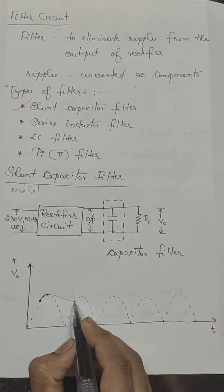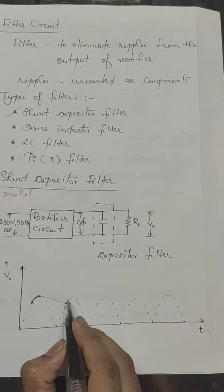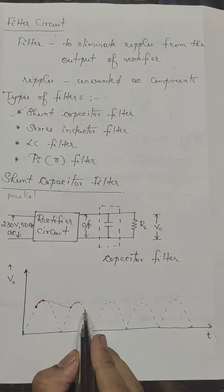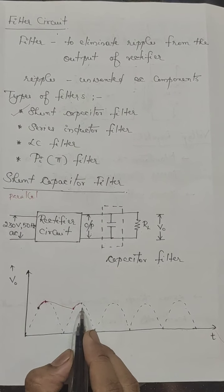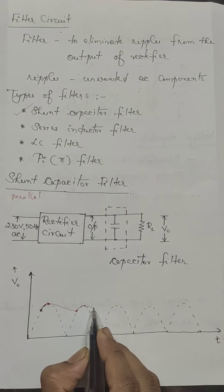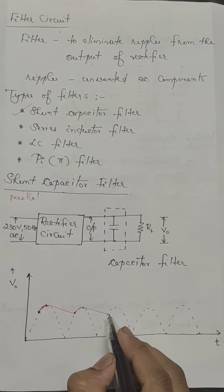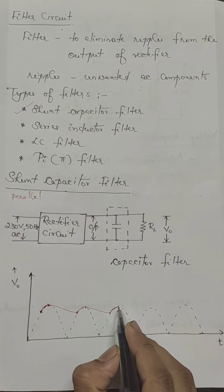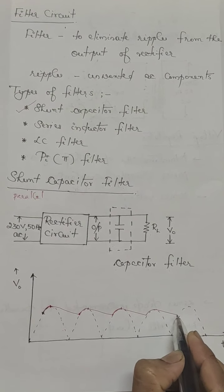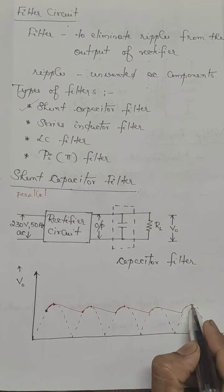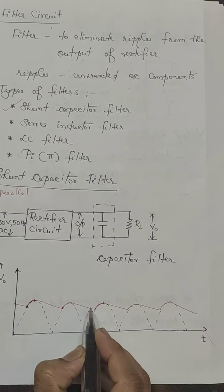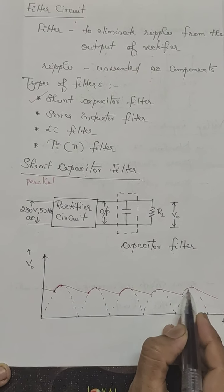At this point, as the rectifier output voltage is increasing, the capacitor again charges to its maximum value. And thereafter, when the rectifier voltage decreases, the capacitor slowly discharges. This process continues. Here, this shows the output voltage of a capacitor filter.